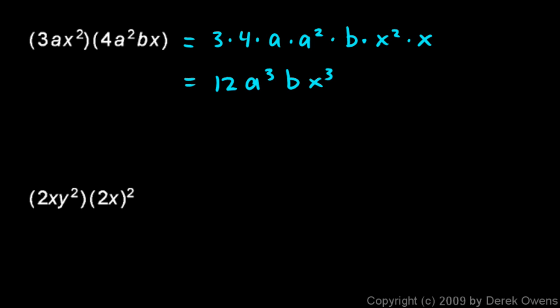And also, as I was saying before, with just a little bit of practice, you can skip writing this step. And you can just look at these numbers and say 3 times 4 is going to give me the 12. And the a times the a squared will give me the a cubed. And the x squared times the x gives me an x cubed, and don't forget about the b.